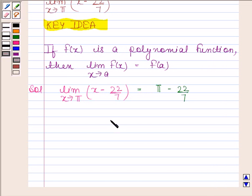Hence, our required limit is π minus 22 by 7. This is our required answer.